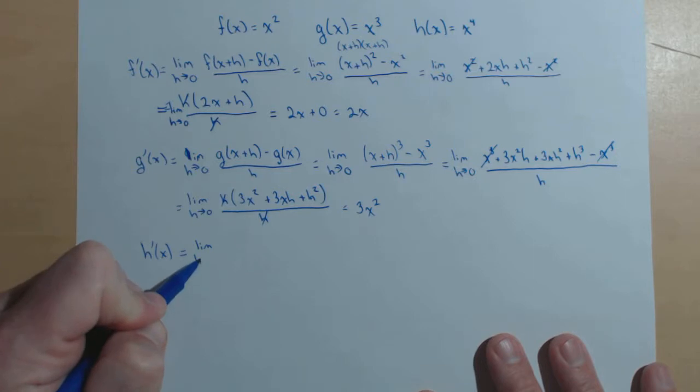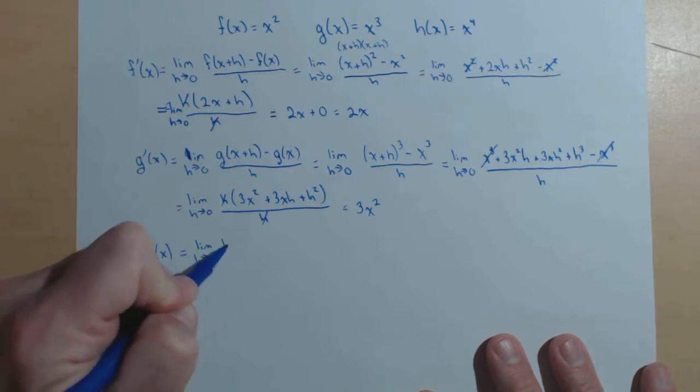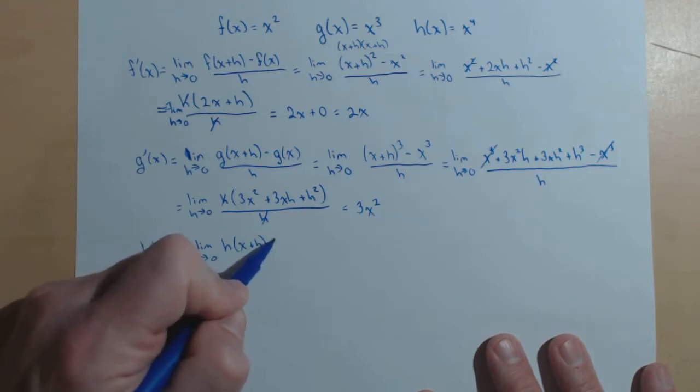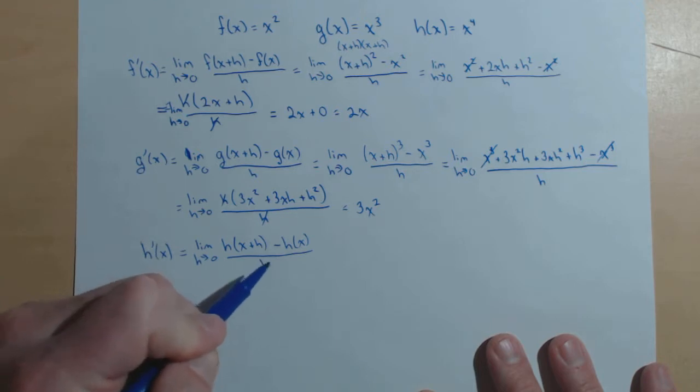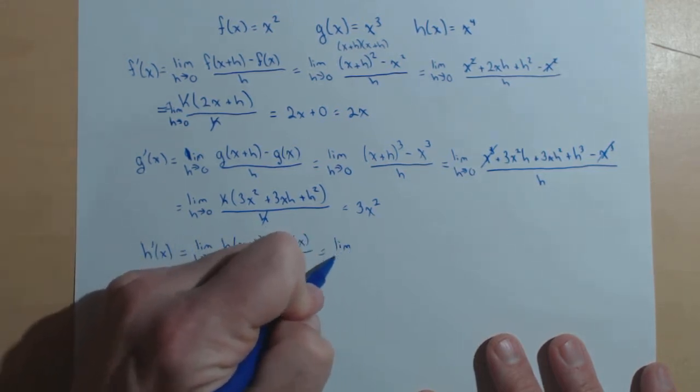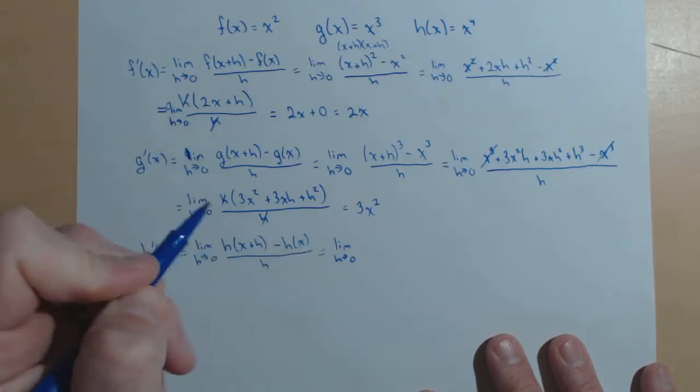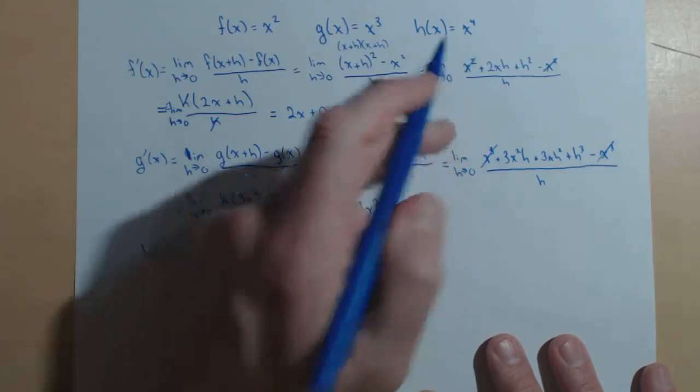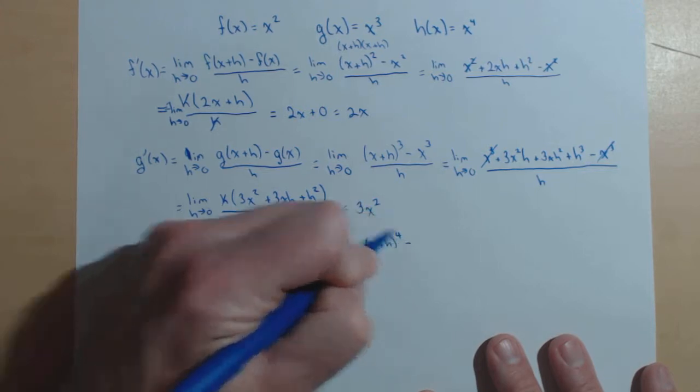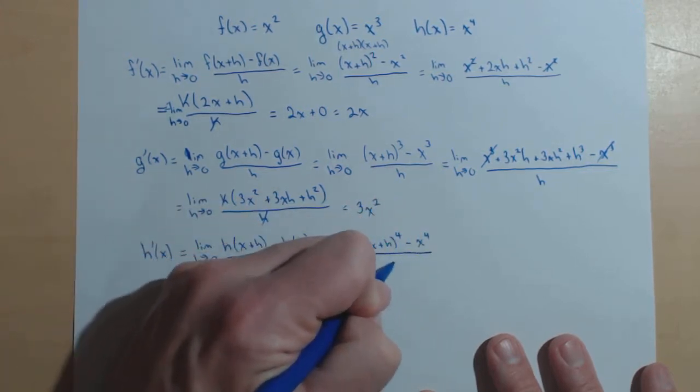So h prime of x is going to be the limit as h goes to zero of h of x plus h. It gets a little confusing to use h here since I have it as the name of a function and a variable, but we'll get rid of it real quick here. So, the limit as h goes to zero: h of x plus h is x plus h to the fourth minus h of x, which is x to the fourth, all over h.